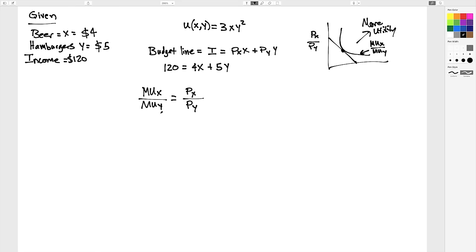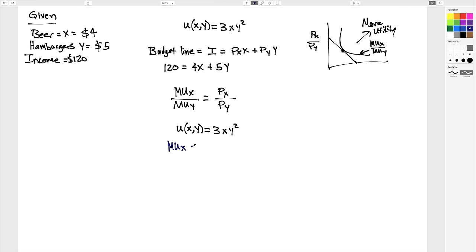So this is actually pretty easy. You just need to find this and this, which we're going to do. So we've got marginal utility of X, which equals the derivative of this function U with respect to X, which equals 3Y squared.